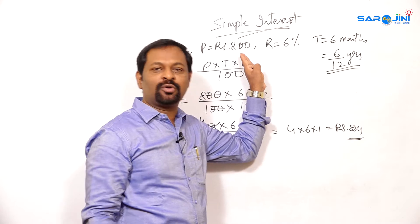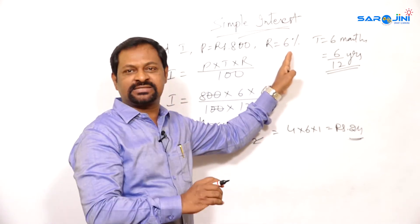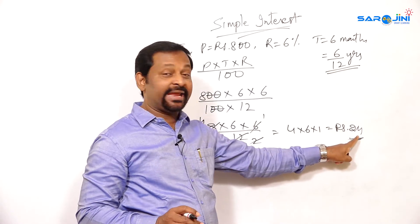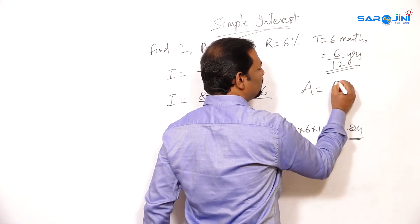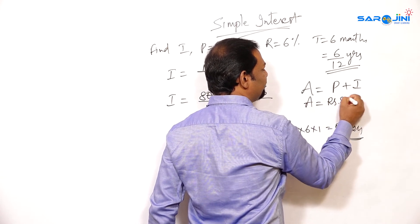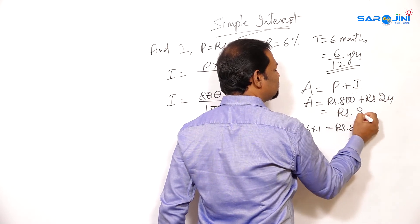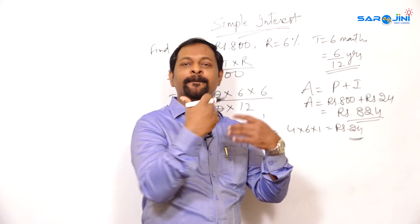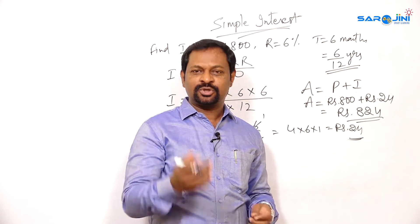That means if you borrow 800 rupees from outside with an interest of 6% per annum, and the time is only 6 months, you are going to pay an extra 24 rupees to the person. The total amount you are going to give is principal plus interest. So total amount is equal to 800 rupees plus 24 rupees, which is nothing but 824 rupees. You have to return it back to the person from whom you borrowed the money. So in this way we can do it.